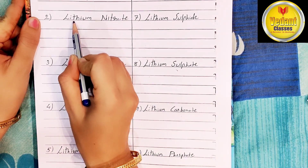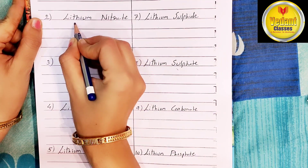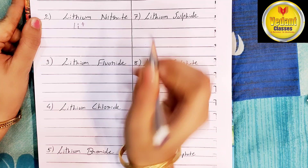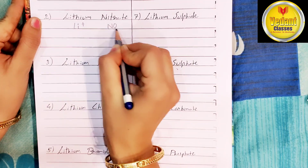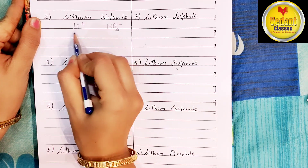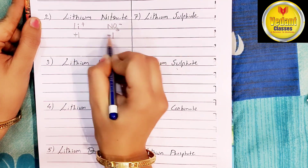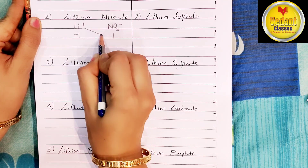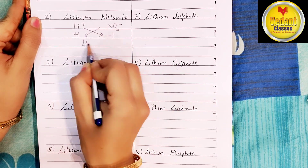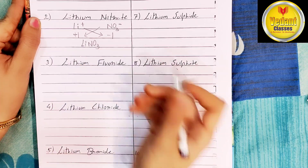We will see lithium nitrate. Lithium ion is written as Li+, nitrate ion is written as NO3-. Valency of lithium ion is plus 1, nitrate ion is minus 1. Now cross the valency. Compound will be LiNO3 — lithium nitrate.